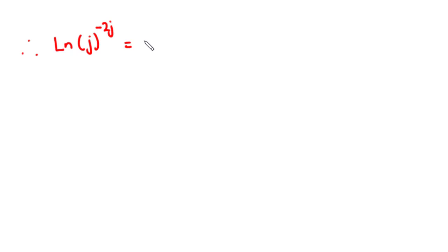Therefore, ln of j to the power negative 2j equals pi times (1 plus 4n). Thank you.